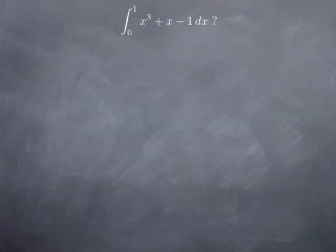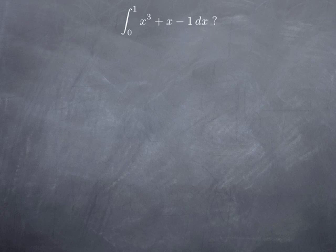So with this corollary in hand, we now have a very efficient way to calculate definite integrals, at least as long as we know how to find an antiderivative of the function we're integrating. This fundamental theorem is important enough that we'll prove it in detail in the next video. First, I want to illustrate how you use it. Let's say we want to integrate the function x³ + x − 1 on the interval [0, 1].